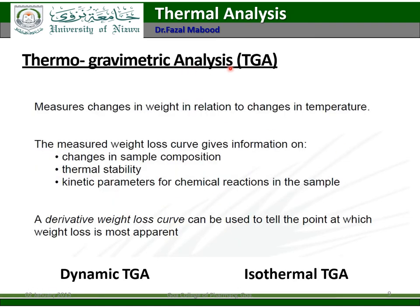Thermogravimetric analysis (TGA) measures changes in weight in relation to changes in temperature. The measured weight loss curve gives information on changes in sample composition, thermal stability, and kinetic parameters for chemical reactions in the sample. A derivative weight loss curve can be used to identify the point at which weight loss is most apparent. There are two types: dynamic TGA and isothermal TGA.